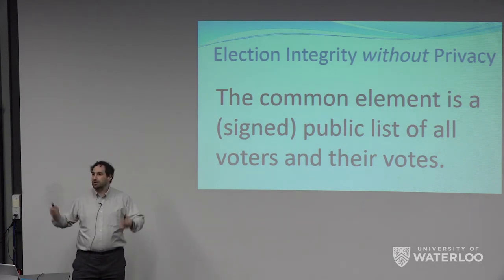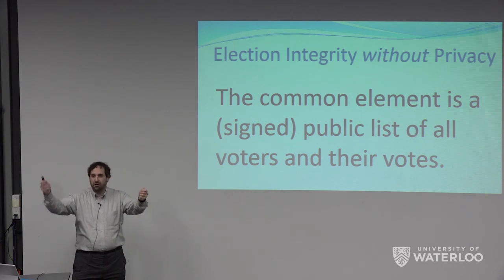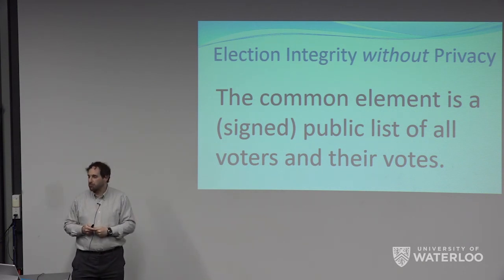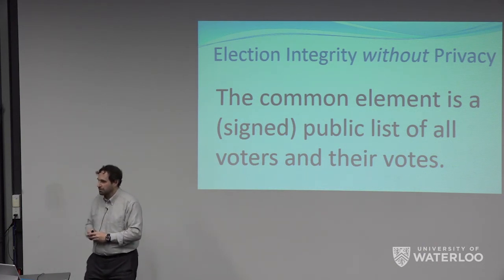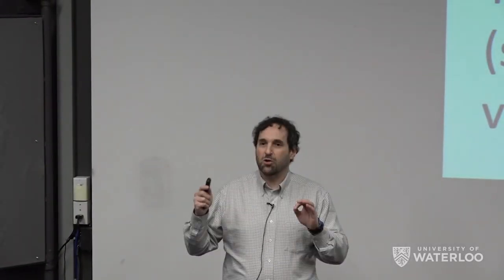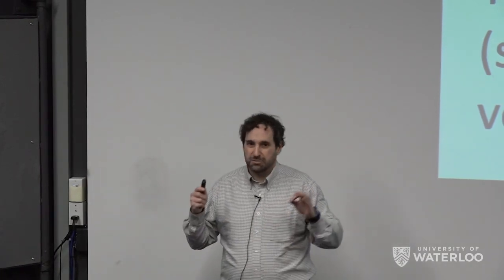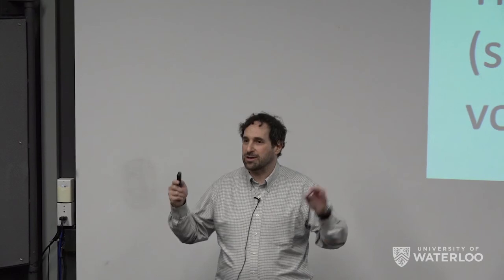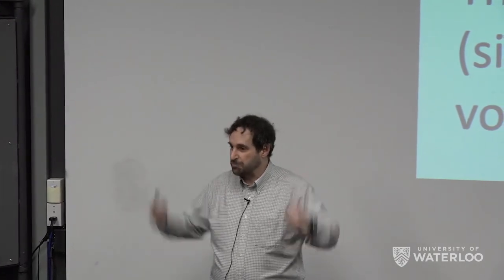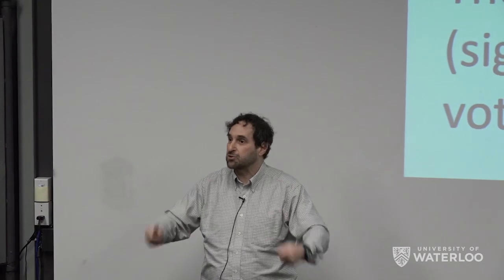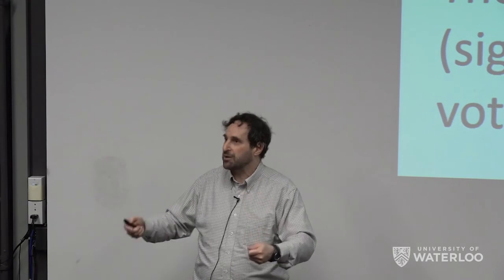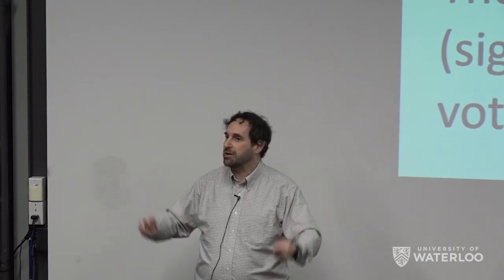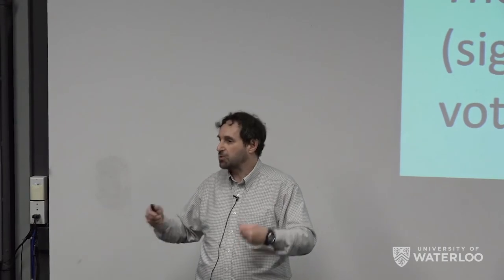What's important is the common element: a signed public list of all voters and their votes. That's what creates the integrity. That allows you to check that you're on there correctly and that all the votes were added up properly. In this context, integrity means an accurate count of the votes that people submit — pulling out privacy. The votes might be coerced and might not be your true desires, but it's an accurate tallying of all votes submitted in the election.